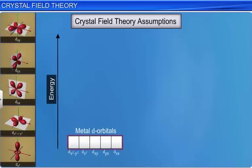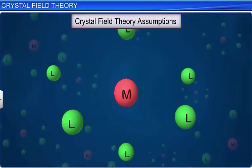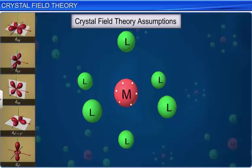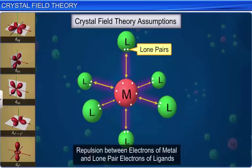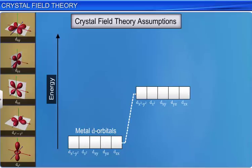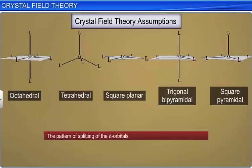The five d orbitals in an isolated gaseous metal atom or ion are degenerate — that is, they all have the same energy. However, when the ligands approach the metal ion to form a complex, the electrons in the d orbitals of the metal will be repelled by the negative charge or lone pair electrons of the ligands due to repulsion between like charges. As a result, the energy of the d orbitals increases and the degeneracy of the d orbitals is lifted. The pattern of splitting of the d orbitals depends on the number of ligands and their arrangement around the central metal atom or ion.